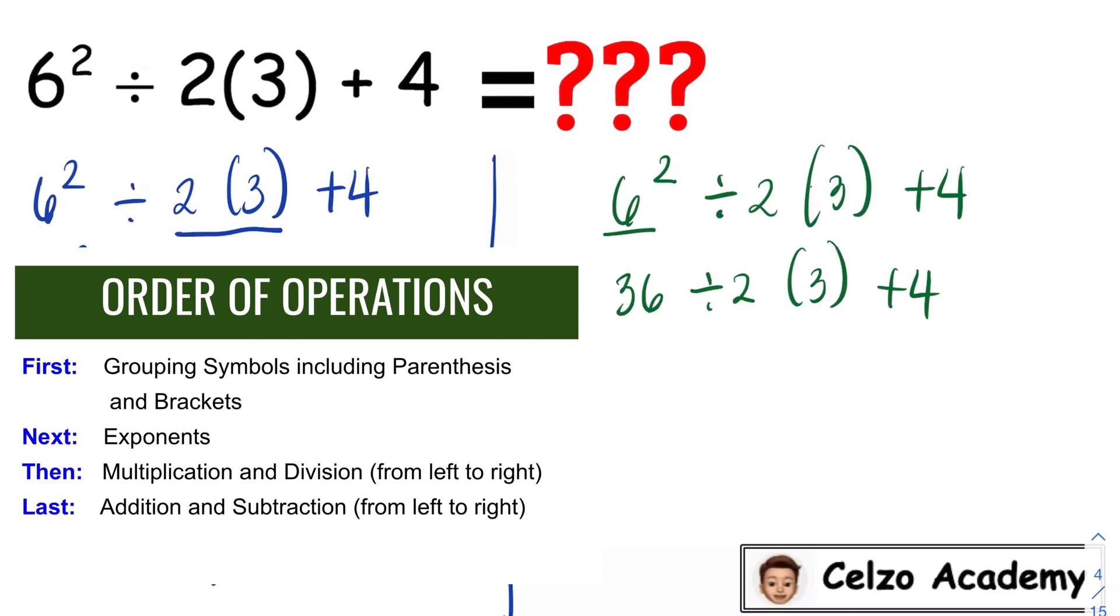In this expression, we have both division and times. So from the rule, I will simplify from left to right. So simplifying first 36 divided by 2, that is 18. 18 times 3 plus 4.